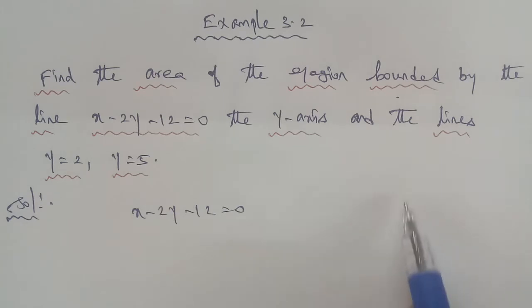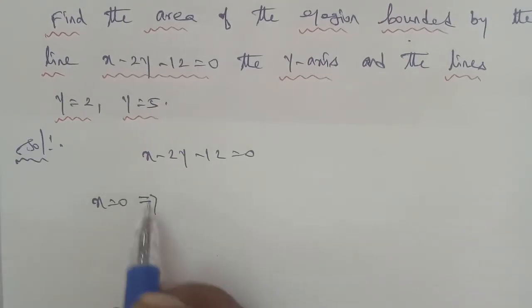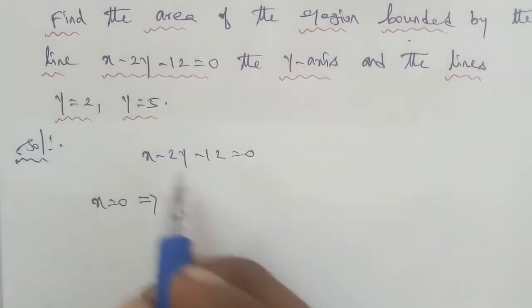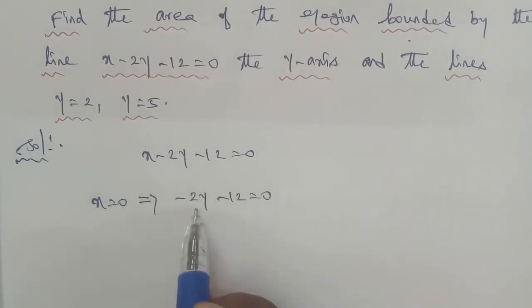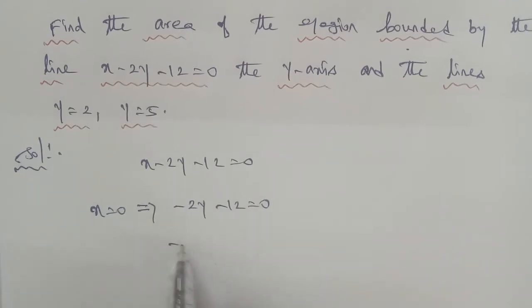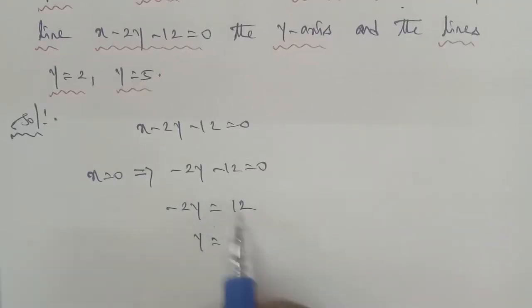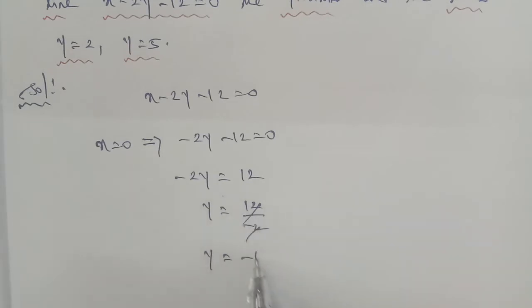To plot the line graph, find the intercept points. First, set x equal to 0. So remaining: minus 2y minus 12 equal to 0, so minus 2y equal to 12, divide by minus 2, that gives y equal to minus 6. So when x is 0, the y-axis intercept is at y equal to minus 6.